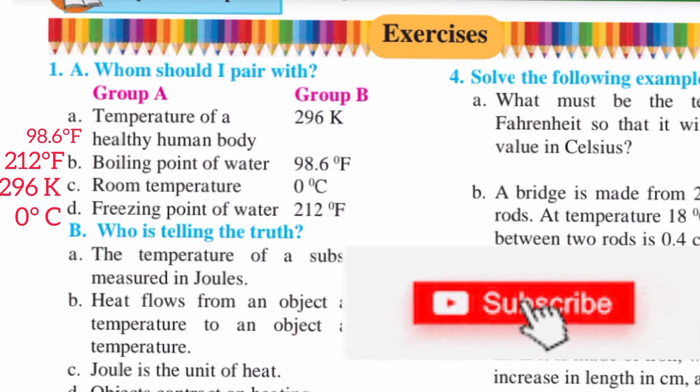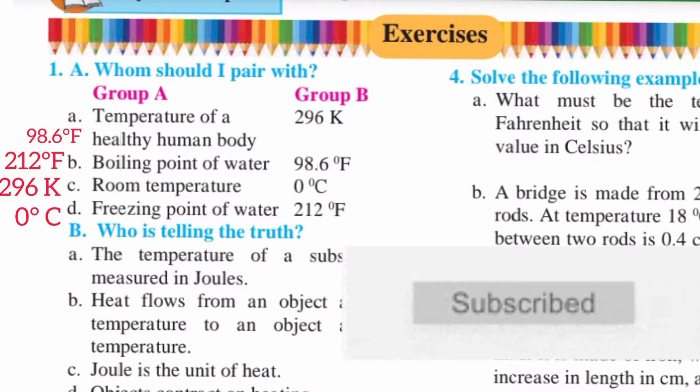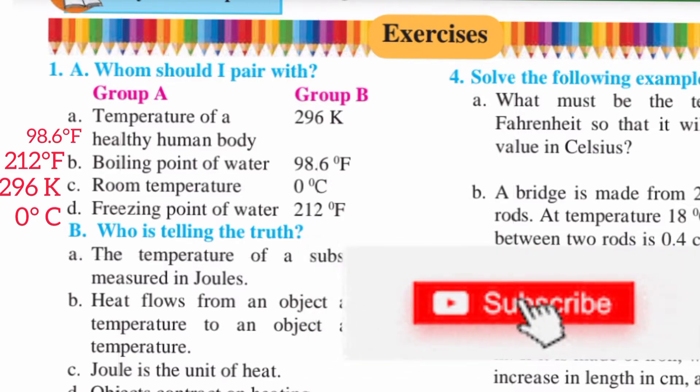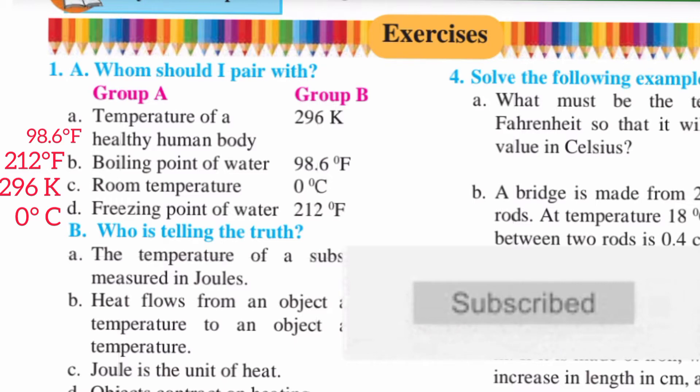Question 1A: Whom should I pair with? Group A: Temperature of a healthy human body - answer is 98.6 degree Fahrenheit. Second, boiling point of water - answer is 212 degree Fahrenheit. C, room temperature - answer is 296 Kelvin. D, freezing point of water - answer is 0 degree Celsius.